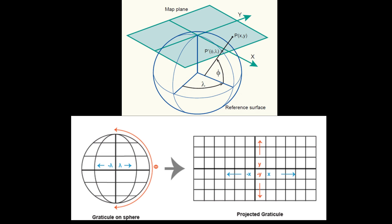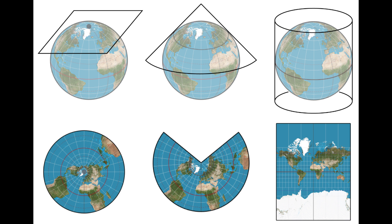It's all based on math and geometry and it can get pretty complicated. I'm not going to get into the math of it all, but because it is math, there are essentially an infinite number of map projections possible. For getting the actual image onto a piece of paper, the three major methods are cylindrical, conical, and planar.